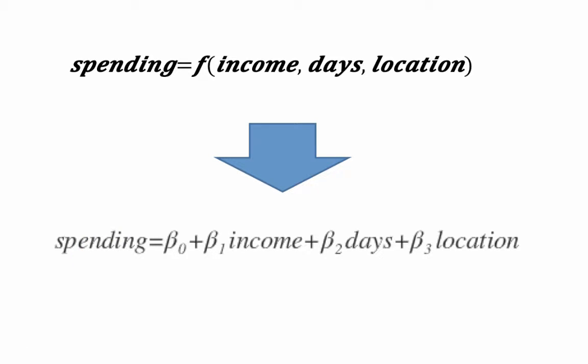We have historical data on income, number of days, location, and spending for a number of families — let's say a thousand families. Based on that data, we want to find values of beta 0, beta 1, beta 2, and beta 3 such that this whole expression becomes a very good predictor of the actual spending. This is not going to exactly tell us what the spending is, but we want something that makes a good prediction without too much error. This is what we are trying to achieve in linear regression.